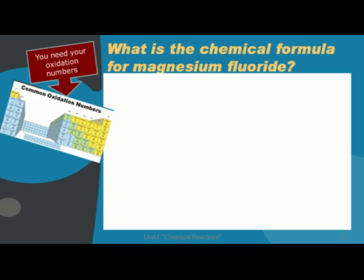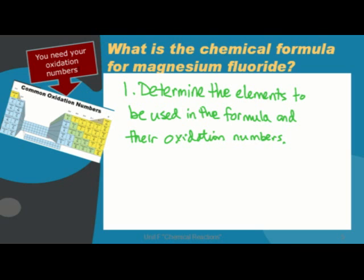There are a few simple steps that you can take to write a chemical formula. Let's explore this. The first step is to determine the elements to be used in the formula and their oxidation numbers.